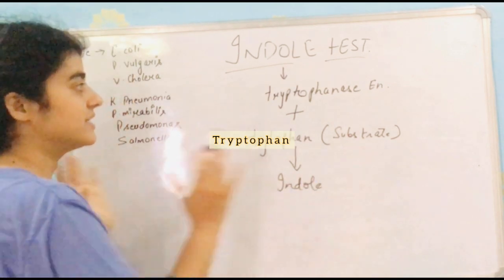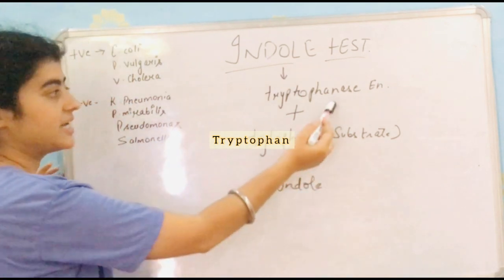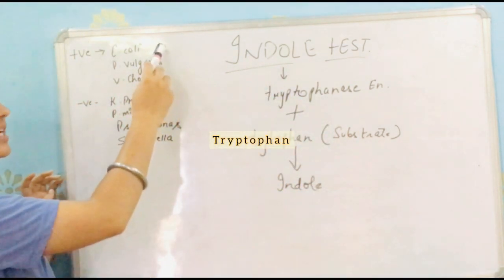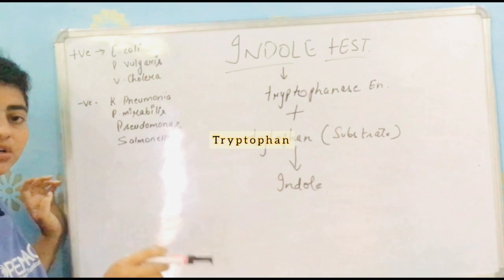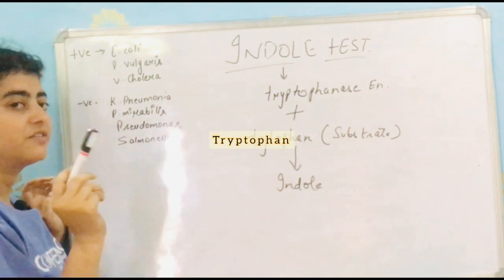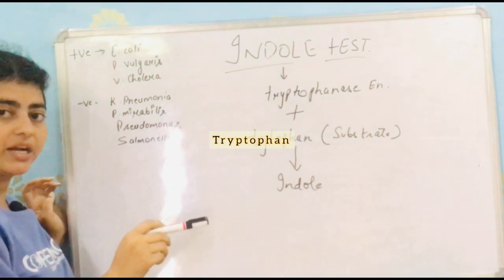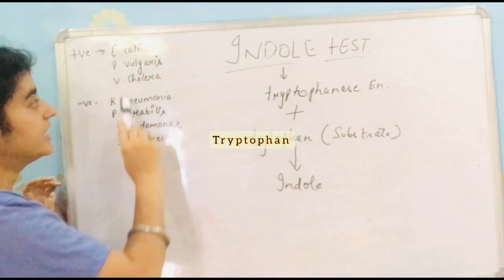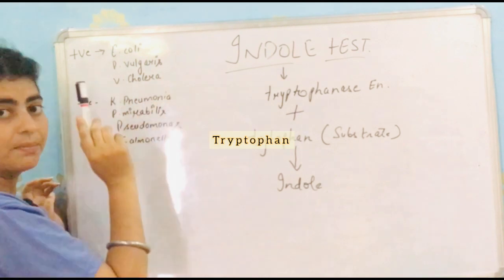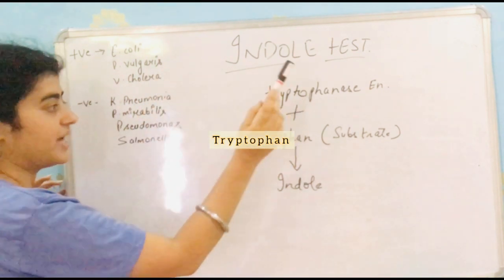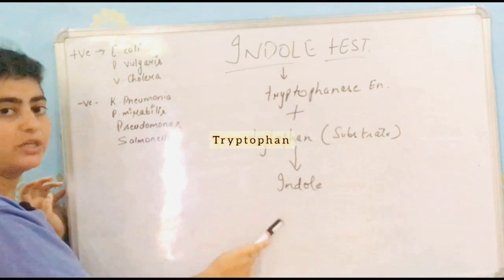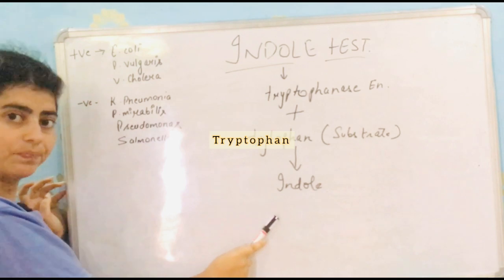There are certain bacteria that produce tryptophanase: Escherichia coli, Proteus vulgaris, and Vibrio cholerae. These three bacteria produce tryptophanase, which degrades tryptophan into indole.